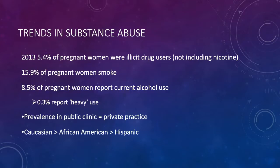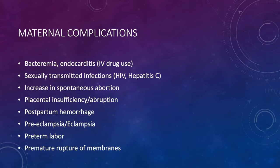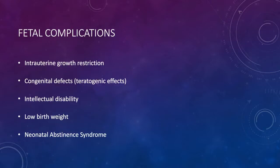Why should we screen? Determining patients with a substance use disorder is the first step. Reasons for screening include maternal complications: bacteremia and endocarditis for IV drug abusers; sexually transmitted infections like HIV and hepatitis — not from the drugs themselves but from associated behaviors. There is also increased spontaneous abortion, placental insufficiency and abruption, postpartum hemorrhage, preeclampsia, eclampsia, preterm labor, and premature rupture of membranes. Fetal complications include intrauterine growth restriction, teratogenic effects causing congenital defects, intellectual disability, low birth weight, and neonatal abstinence syndrome.